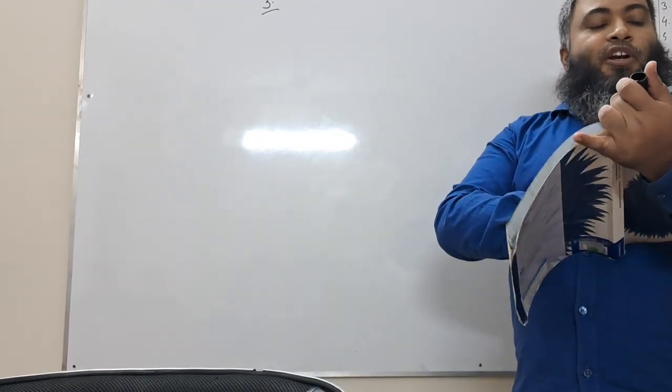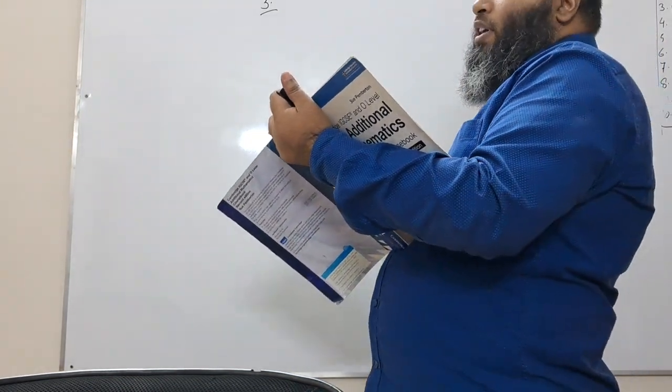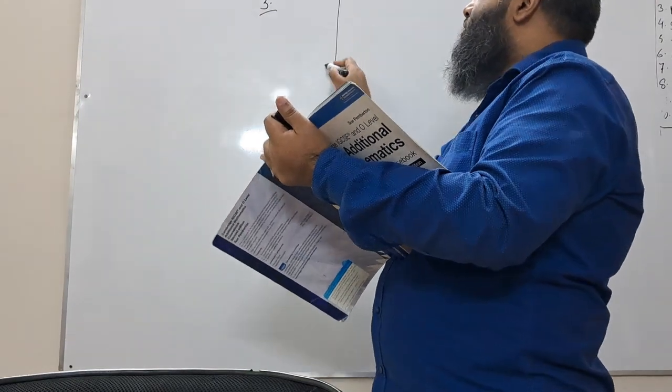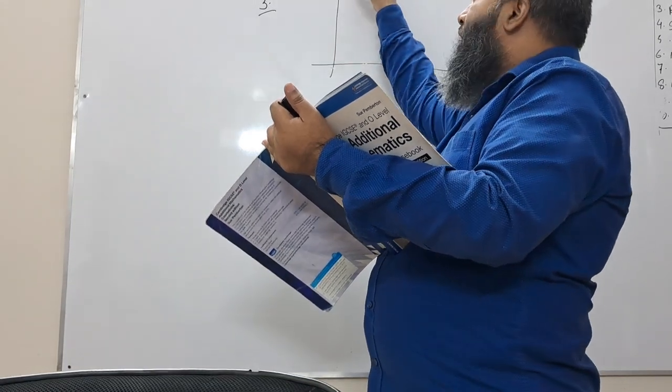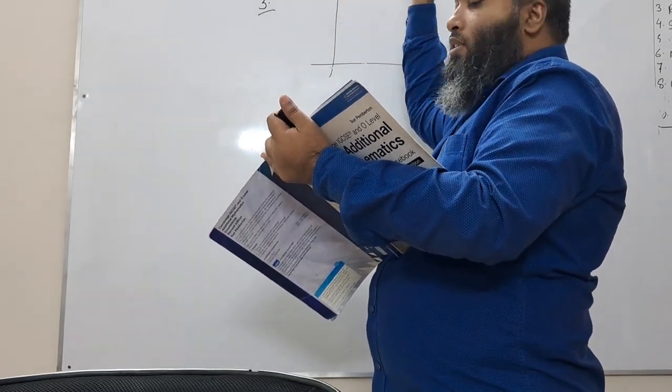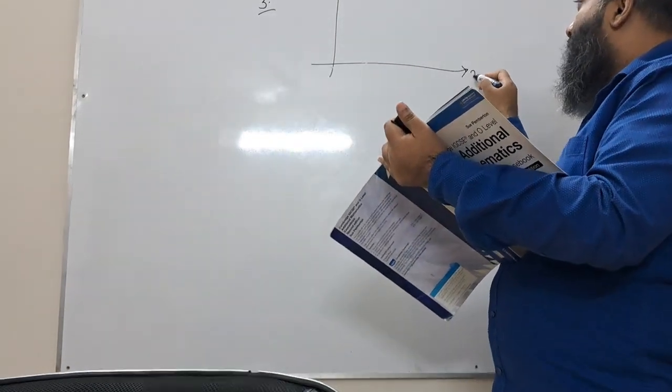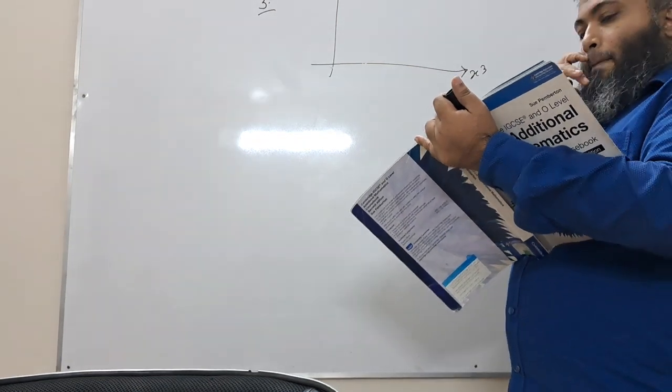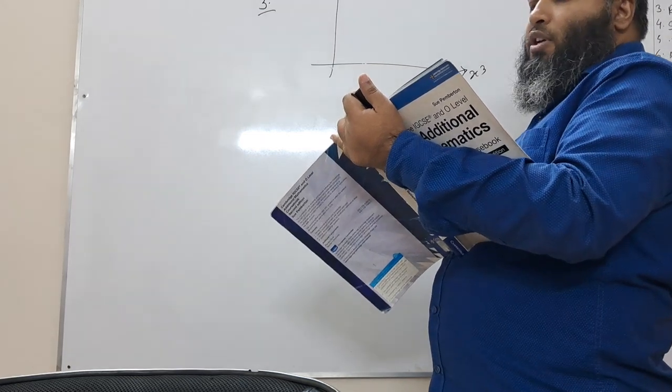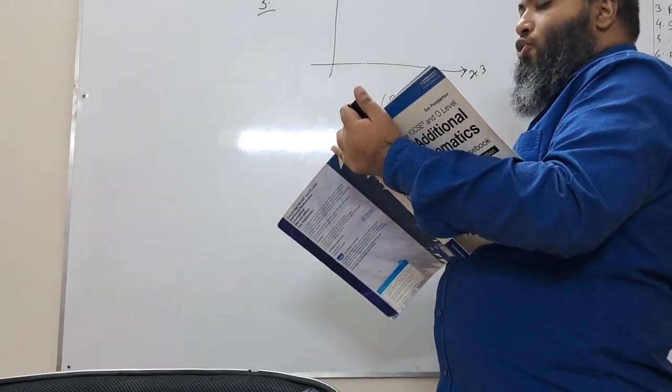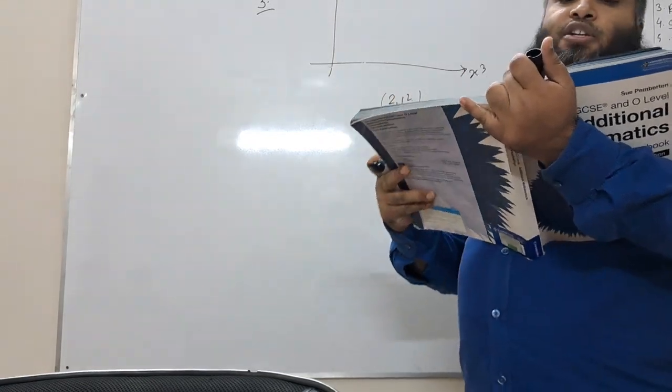Variables x and y are related so that y times x squared is plotted on the vertical axis. This is the vertical axis, y times x squared. And x cubed is plotted on the horizontal axis. This is x cubed. A straight line graph passing through (2, 12) and (6, 4) is obtained. Express y in terms of x.